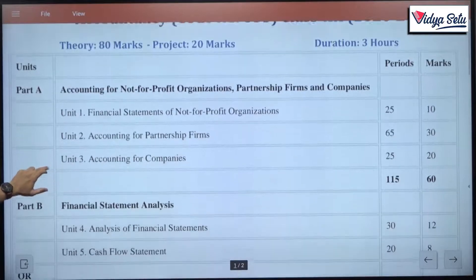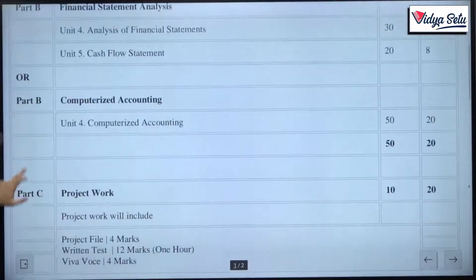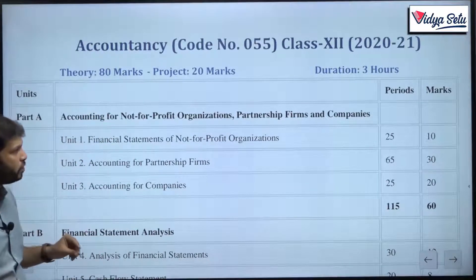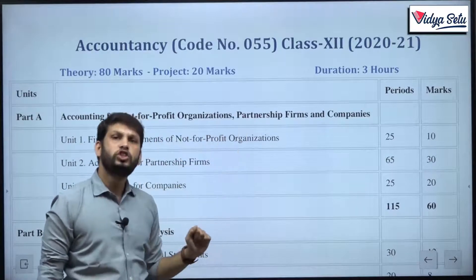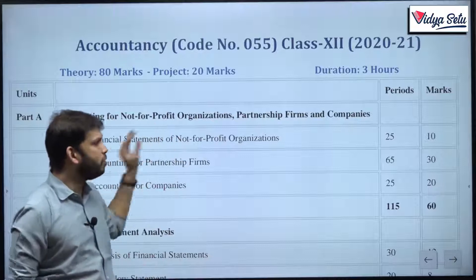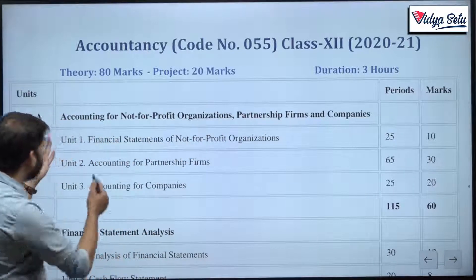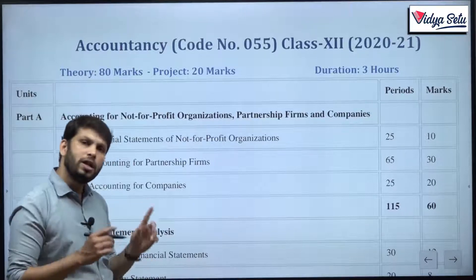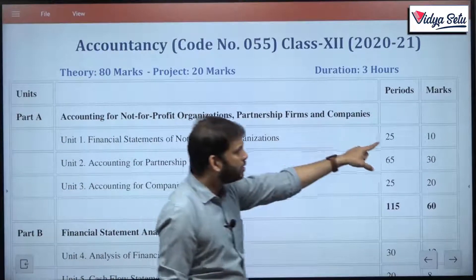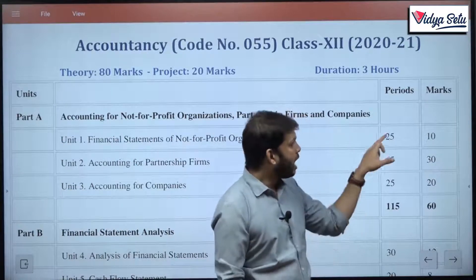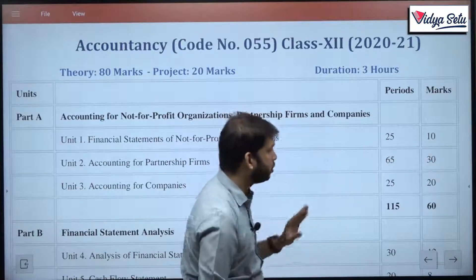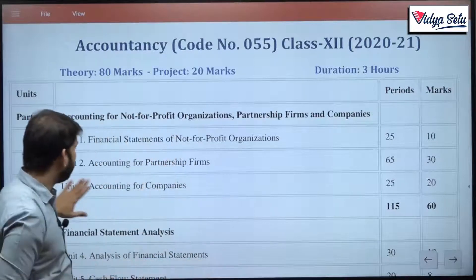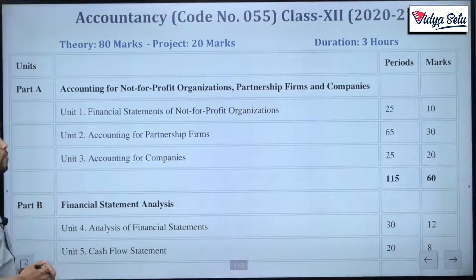12th standard accountancy is divided into 3 units: Part A, Part B, and Part C. In Part A, the chapters we are going to discuss are accounting for not-for-profit organizations, partnership firms, and companies. Generally, you will have one book which comprises all these 3 topics. There will be various units. The first unit will be financial statements of not-for-profit organizations, and there will be only one chapter with this name.